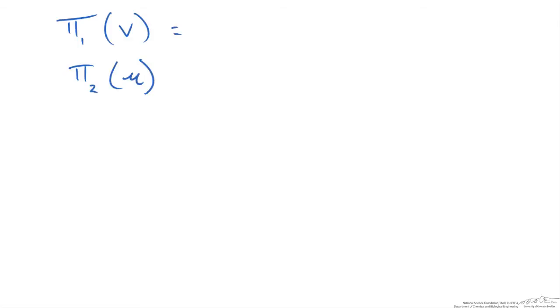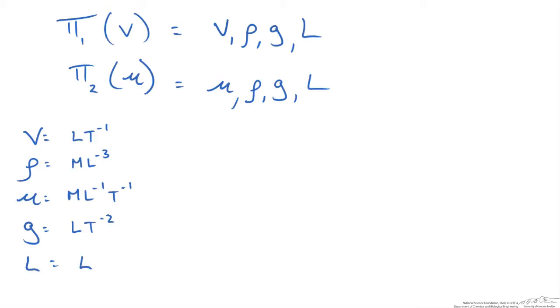So this means that our pi term that has velocity in it is going to contain velocity, density, gravity, and length possibly. These are our 3 repeating variables that we are going to use. And then in our second case we will have those same repeating variables. Although they may or may not be used to make it dimensionless. So what we should do at this point is write the dimensions down for each of these variables. So velocity is a length per time, density is a mass per length cubed, viscosity is a mass per length per time, acceleration due to gravity is a length per time squared, and then lastly length is just length. So now we have our dimensions for each of our variables.